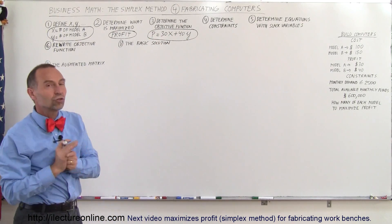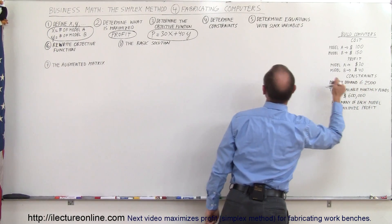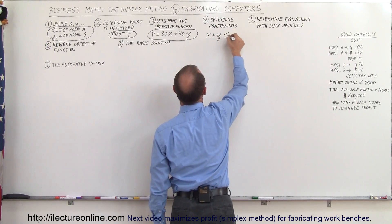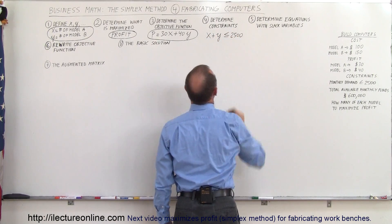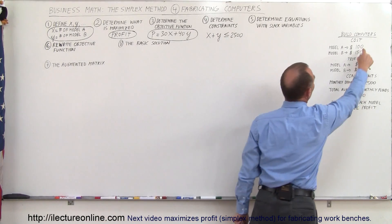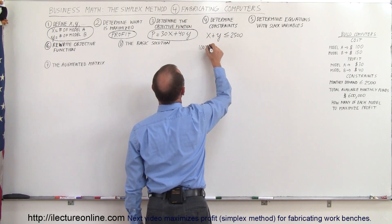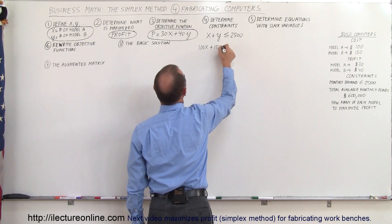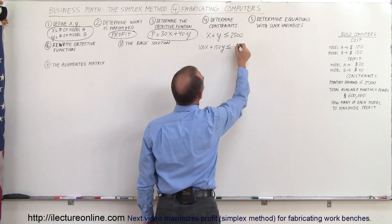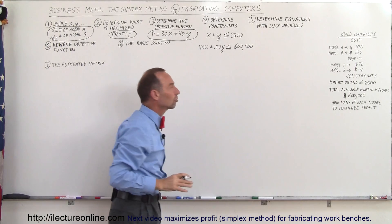Next we determine the constraints. We have two: the total number we can build, so X plus Y must be less than or equal to 2,500; and the total manufacturing cost, so 100X plus 150Y must be less than or equal to $600,000 — the total funds available. Those are our two constraints.